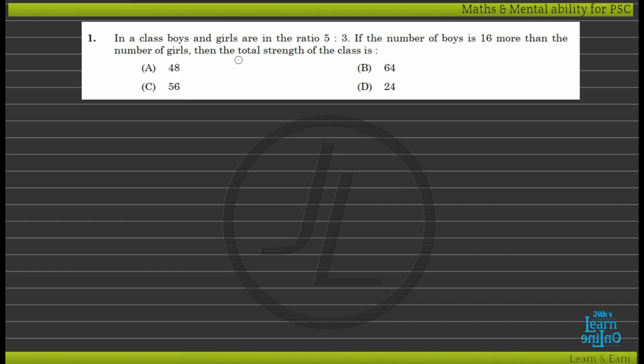In class, boys and girls are in the ratio of 5 is to 3. The number of boys is 16 more than the number of girls. Then the total strength of the class is?